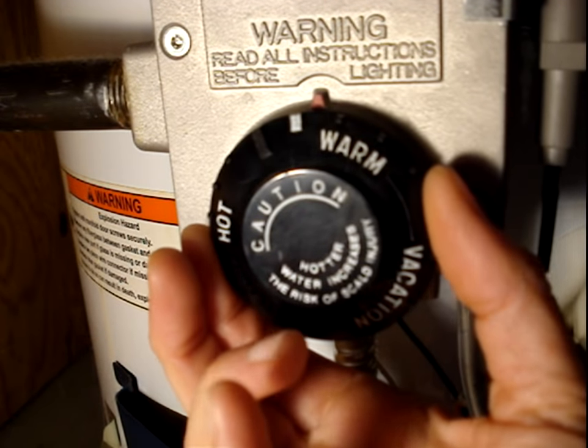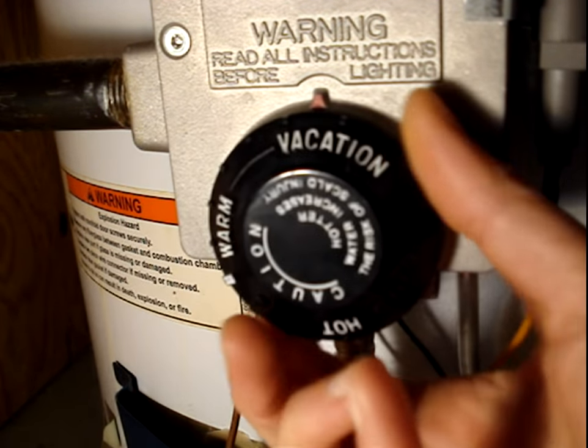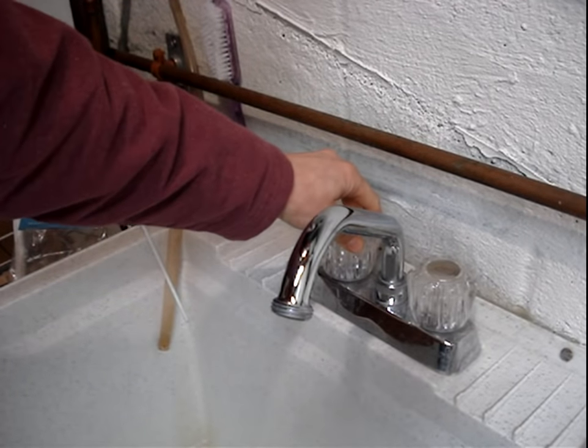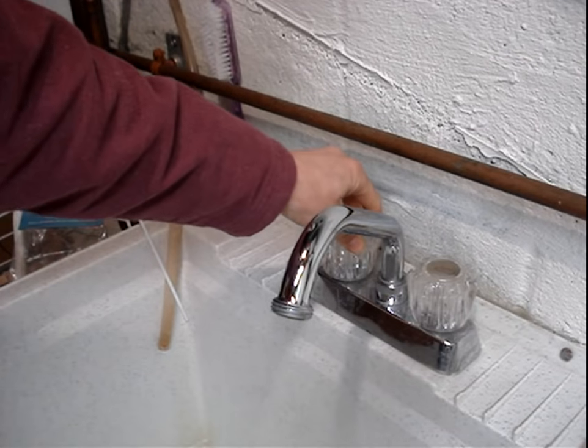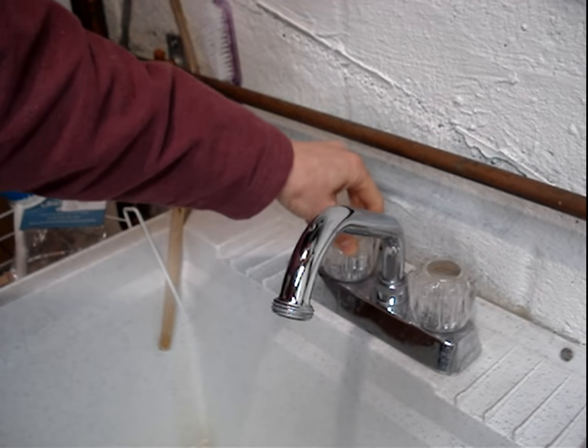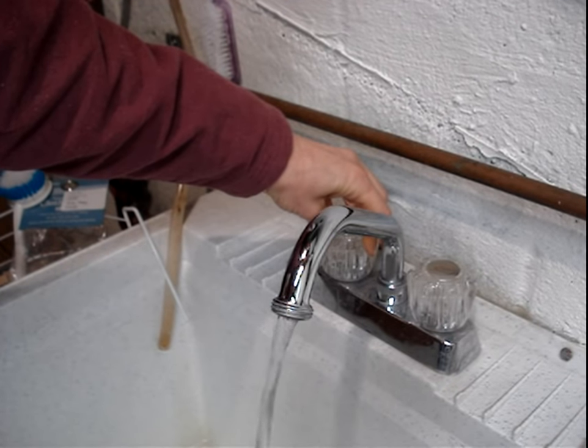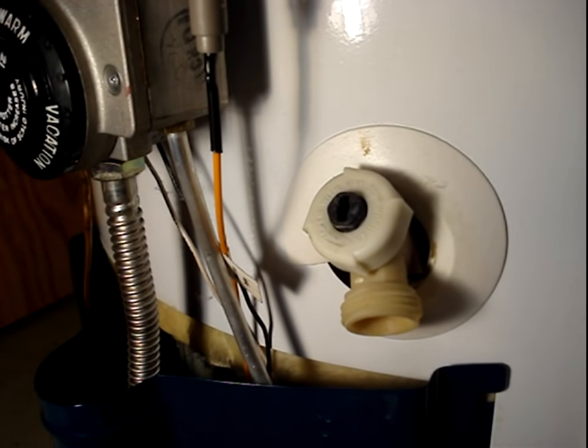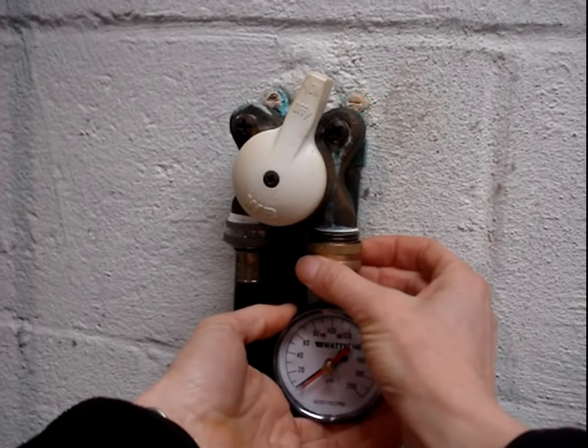To prevent thermal expansion, set the water heater to vacation mode. Open a faucet to relieve any pressure that may have built up in the system. Attach a water pressure test gauge downstream from the water pressure regulator on a faucet, on a hot water heater drain valve, or a washing machine shutoff valve.